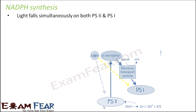Till now we were only talking about PS2. So now let us see what happens when the electron reaches PS1 from the electron transport system. When I said that light falls on PS2, it actually falls simultaneously on both PS2 as well as PS1. Whatever is in black and white we have already discussed; whatever is in color we are going to discuss now. Till this part you already know that from PS2 the electron got excited, it passes through the electron transport chain, and finally the low energy electron reaches PS1.